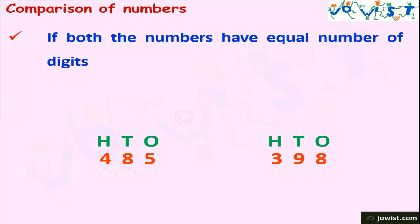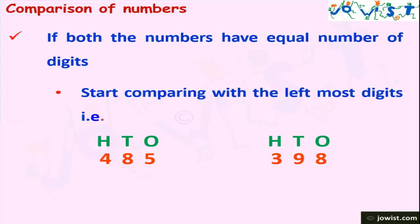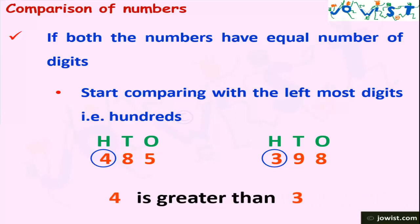In 485, it has five ones, eight tens, and four hundreds. And in 398, we have eight ones, nine tens, and three hundreds. Start comparing with the leftmost digits, that is the hundreds. 485 has four in the hundreds place and 398 has three in the hundreds place. Here, four is greater than three. Hence, 485 is greater than 398.